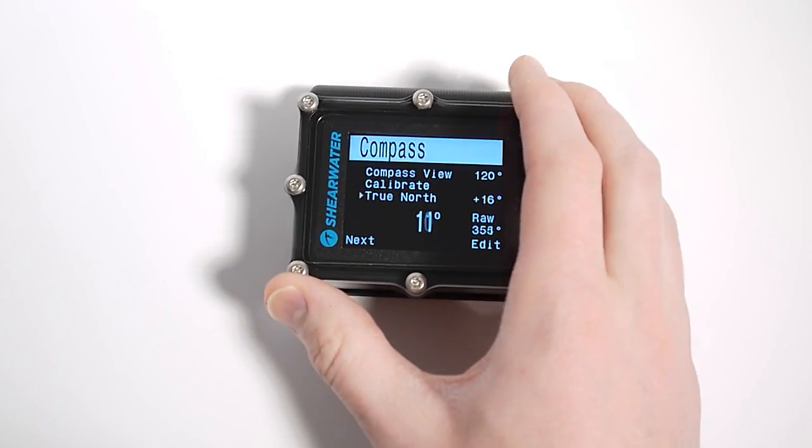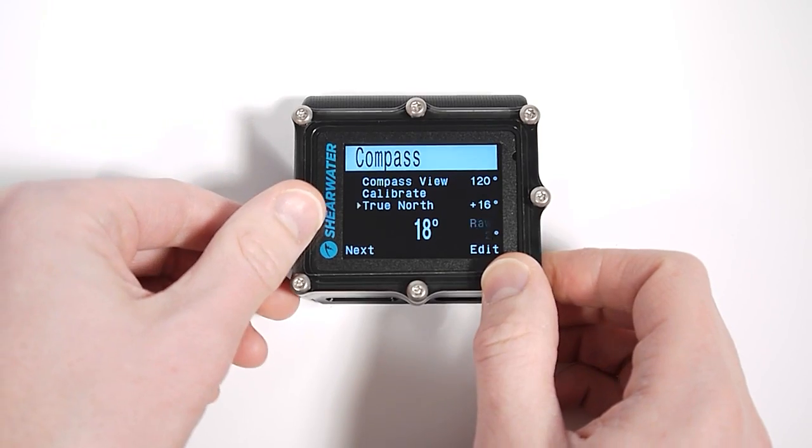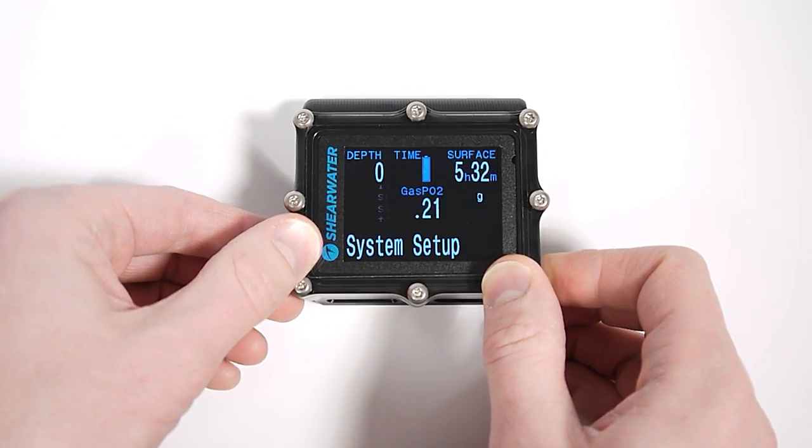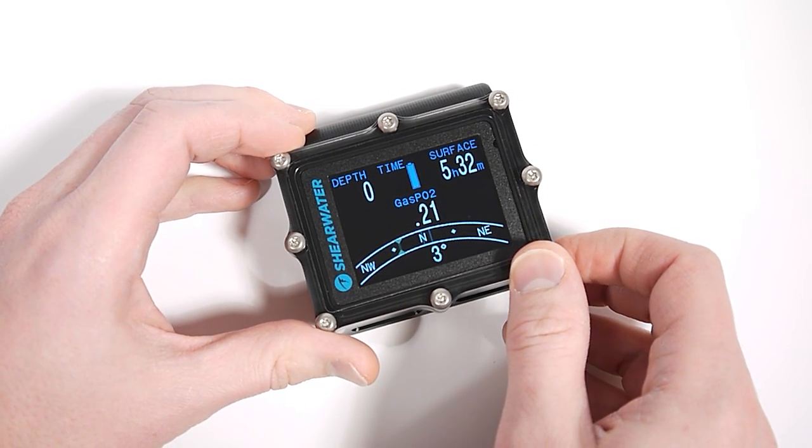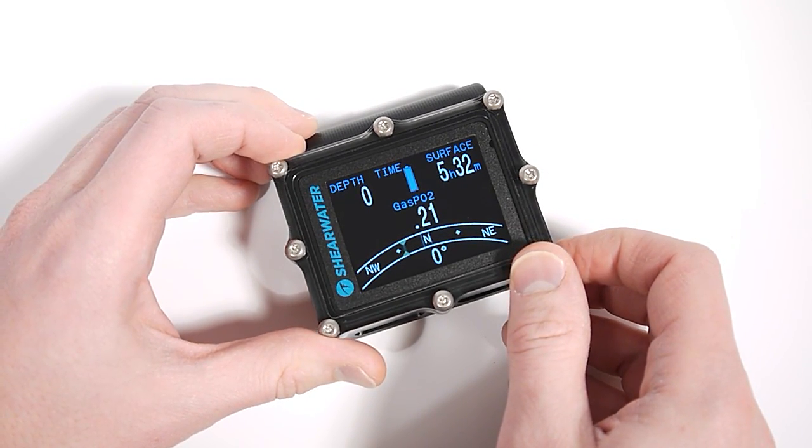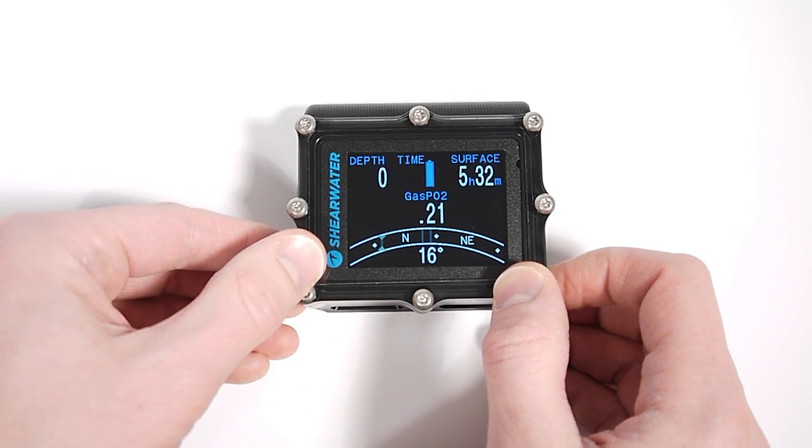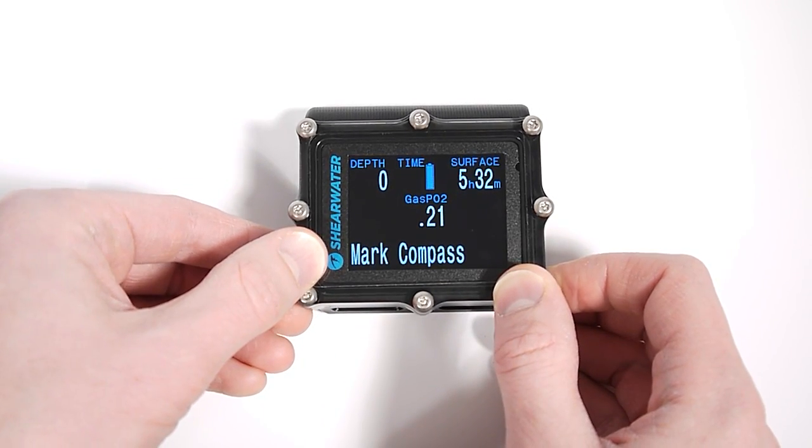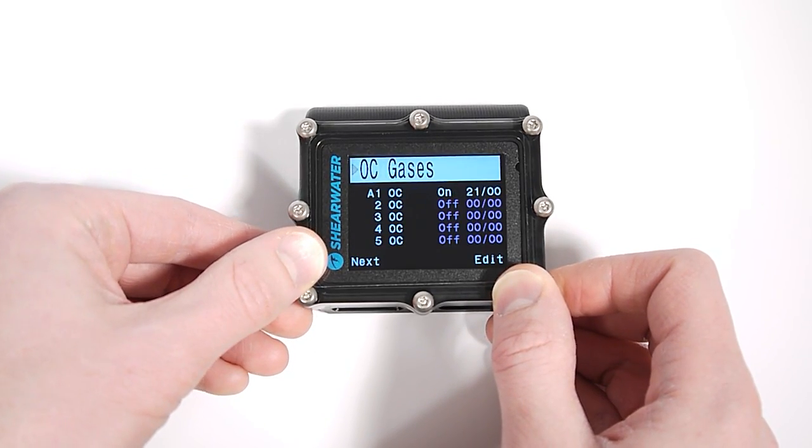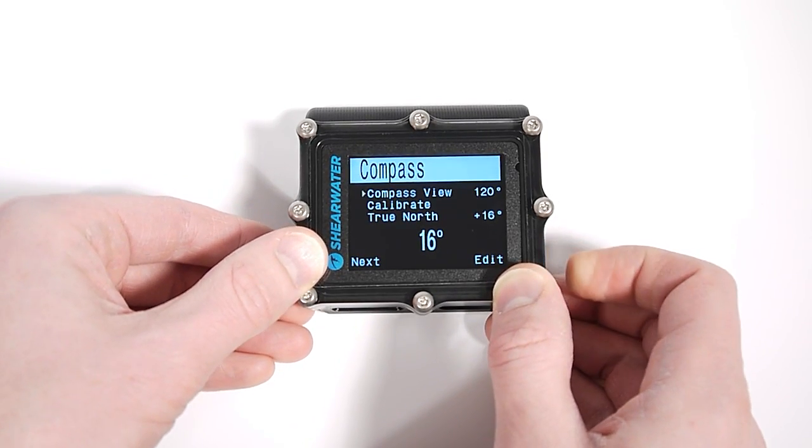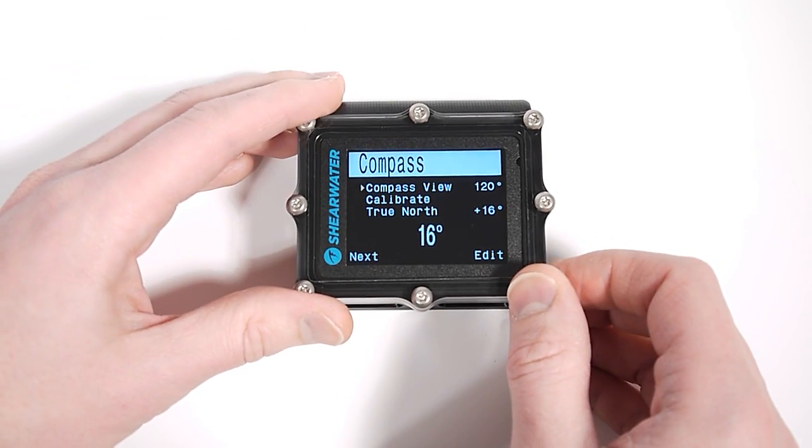And now it will, the direction that the compass points will actually be to true north. As opposed to magnetic north, which varies around the world. Now if you're just trying to match an analog compass that's uncompensated or your navigation is just relative, you can leave that setting at zero. You don't have to use it.